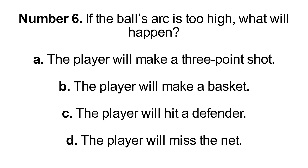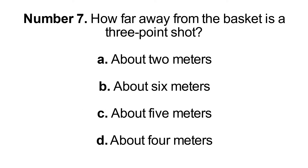Number 6: If the ball's arc is too high, what will happen? A. The player will make a three-point shot, B. The player will make a basket, C. The player will hit a defender, D. The player will miss the net. Number 7: How far away from the basket is a three-point shot? A. About 2 meters, B. About 6 meters, C. About 5 meters, D. About 4 meters.